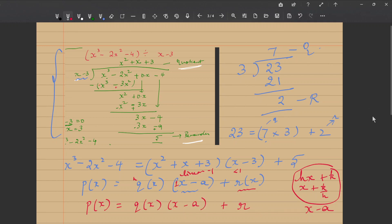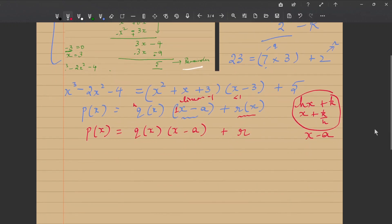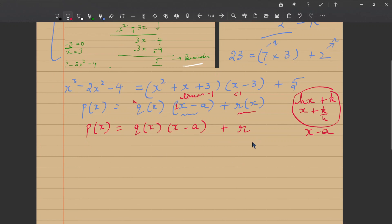So I rewrite the same equation: P of x is equal to q of x into x minus a plus r. This holds good for any value of x. This term, this is just a division fact, nothing else. This is just like this, a numerical division fact and this is a division fact. It holds good for any x, means it has to hold good for if I take x is equal to a. It has to hold good for P of a also.